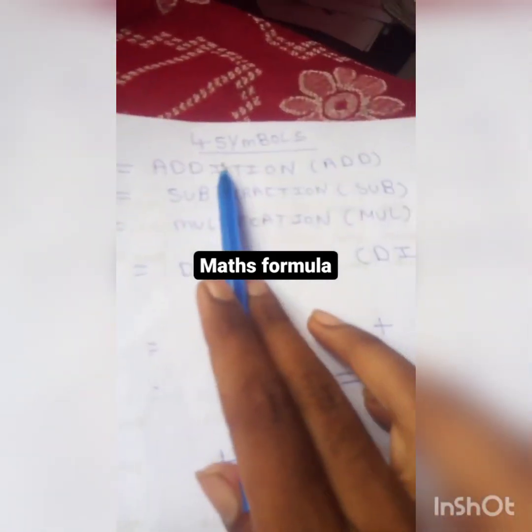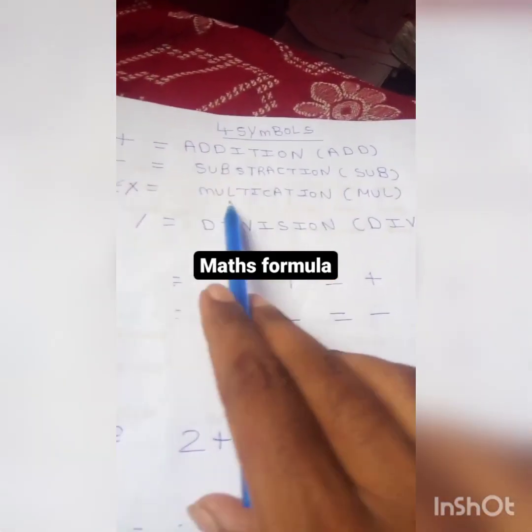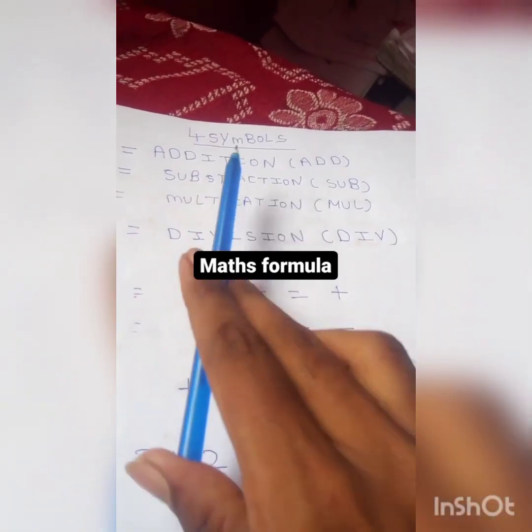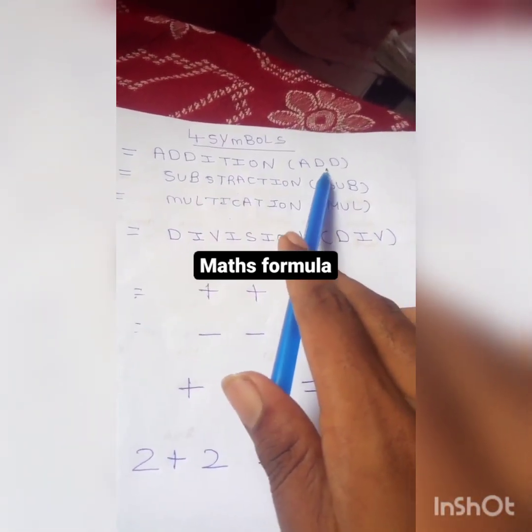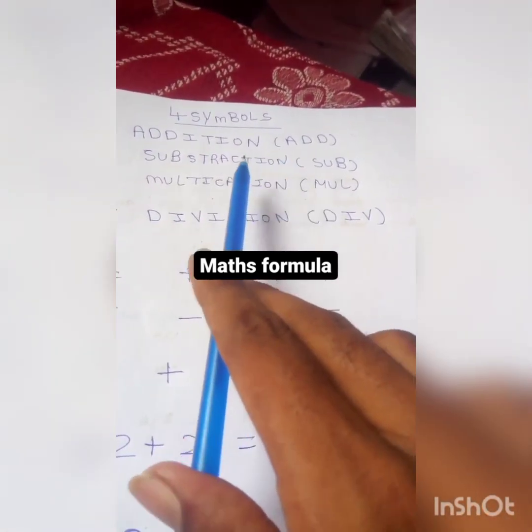I have 8 symbols: addition, subtraction, multiplication, given. Addition is a shortcut. Addition, subtraction, subtraction.